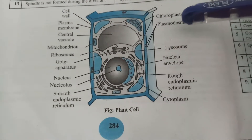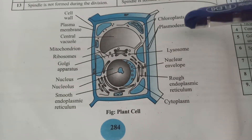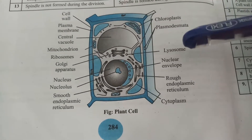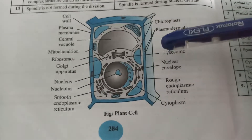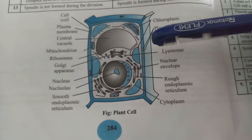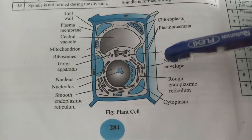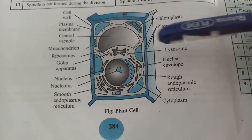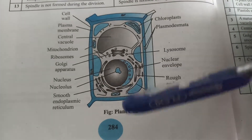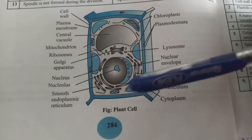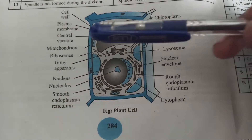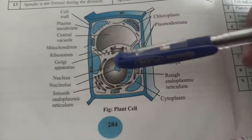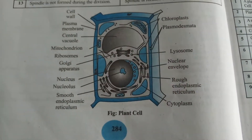Chloroplast is a very important cell organelle concerned with anabolic reactions, or the preparation of food. Because of the presence of chlorophyll inside the chloroplast, plant cells are autotrophs that synthesize their own food and produce their own ATP. Both anabolic and catabolic reactions take place inside the plant cell. This is all about the plant cell.